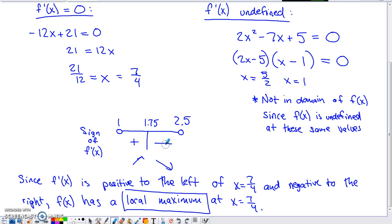therefore we have a local max at 7 fourths. It's not the only justification statement you can make, but you have to verbalize what that sign chart tells you. You can't just leave the sign chart to be your justification.